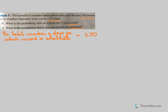The record of a weather station shows that out of 250 days, its weather forecasts were correct 175 times. The total number of days for which the record is available is 250. The forecast was correct 175 times.